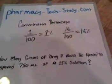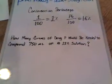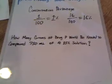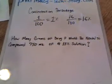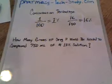Let's apply that to a question you'll see quite a bit of in practice quizzes and on the test. It says: how many grams of drug P would be needed to compound 750 milliliters of a 15% solution?